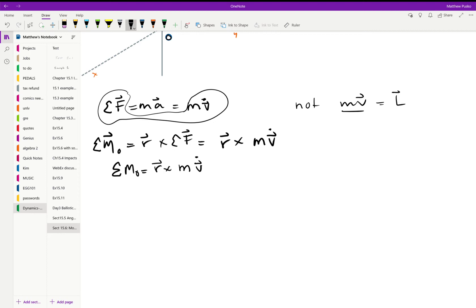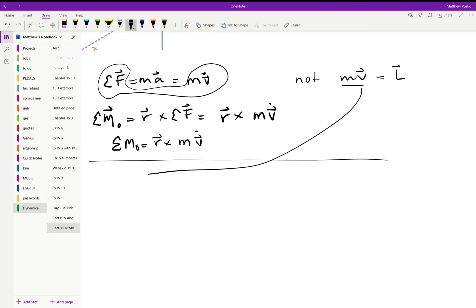Now hold on to that for a second. We had this angular momentum thing we've been talking about. That's linear momentum. We find the angular momentum H by taking the cross product with the linear momentum.